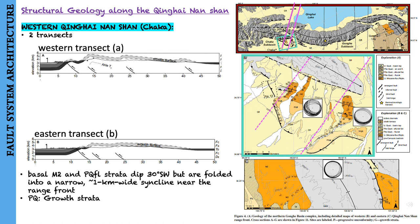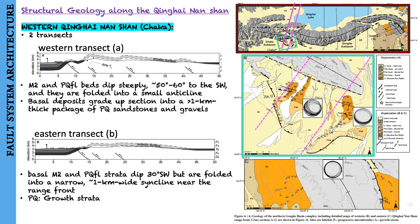Along the western transect, the correlative beds dip steeply around 50 to 60 degrees to the southwest and are folded into a small anticline that sits above a bedrock seal near the range front. Basal deposits grade upsection into a more than 1 km thick package of PQ sandstones and gravels.